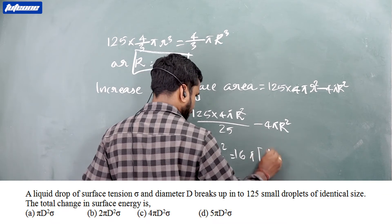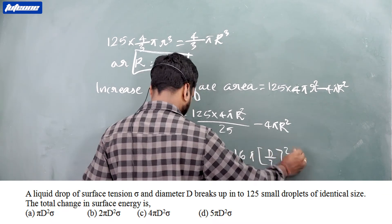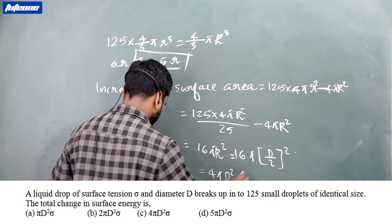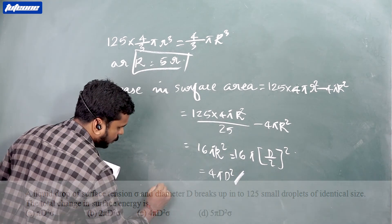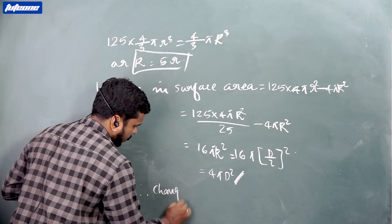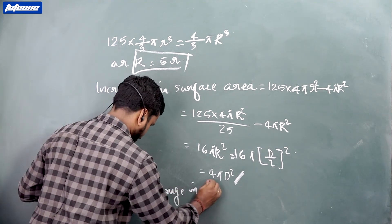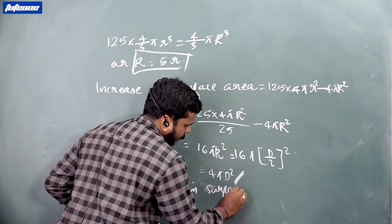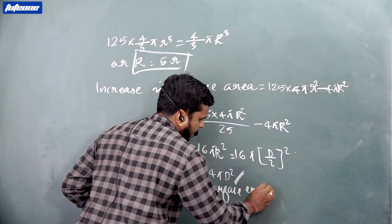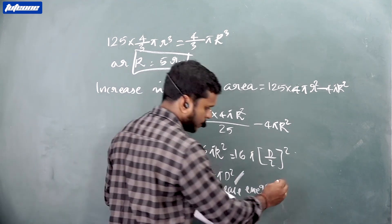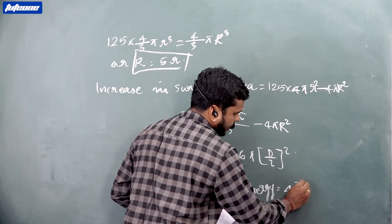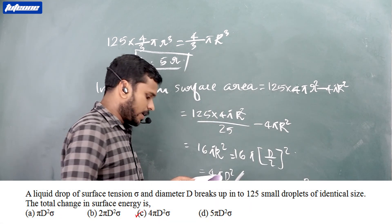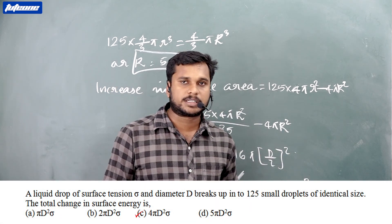Therefore, change in surface energy delta E equals 4 pi D square sigma. So the right answer is option C.